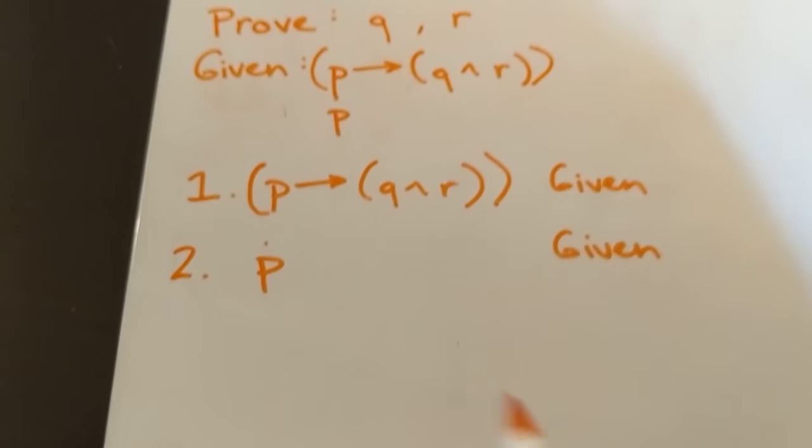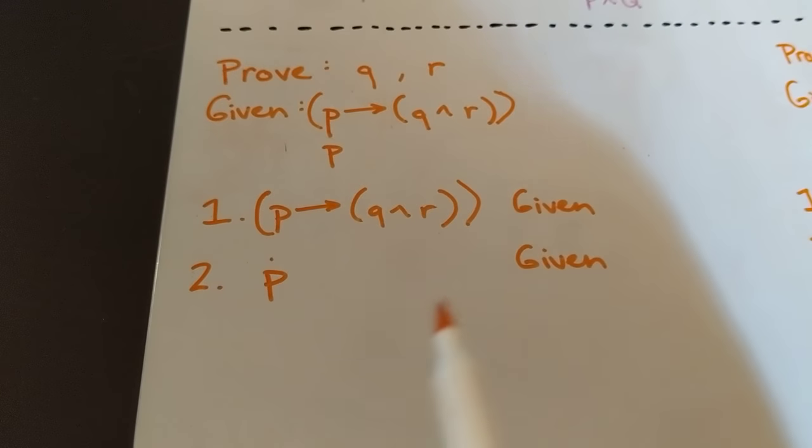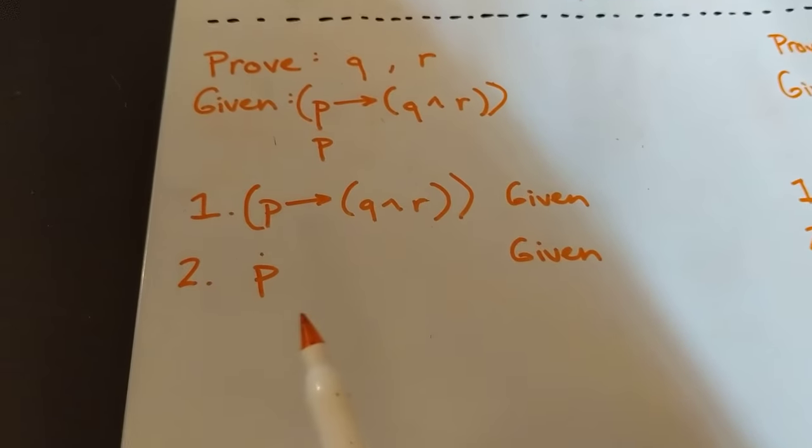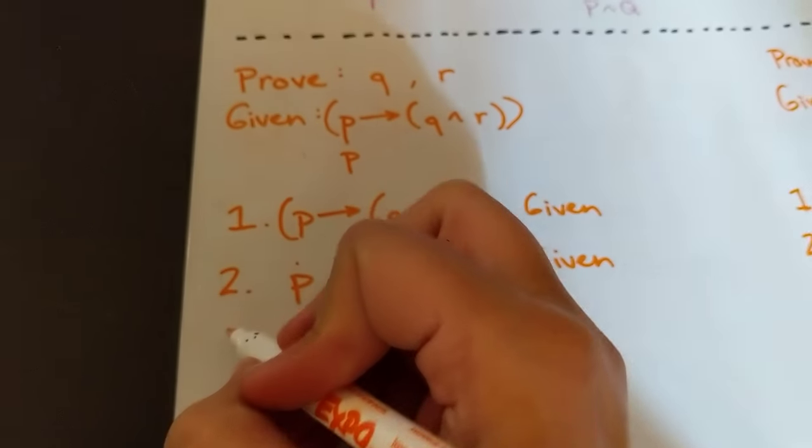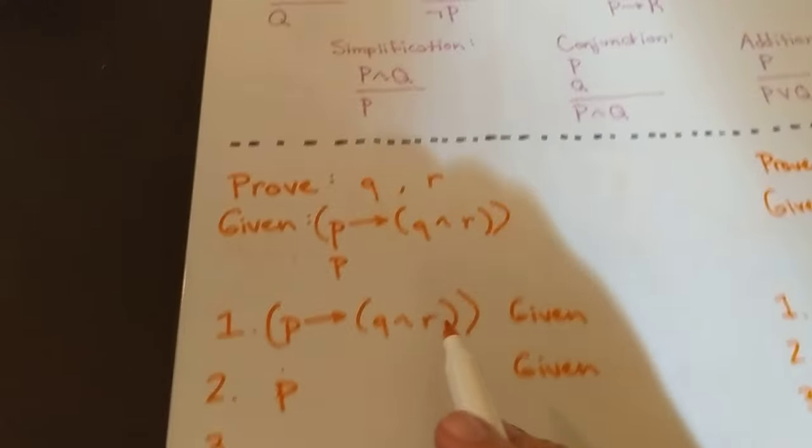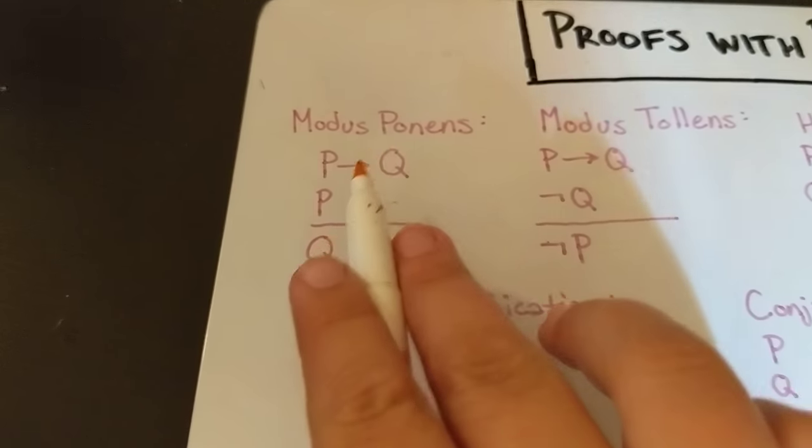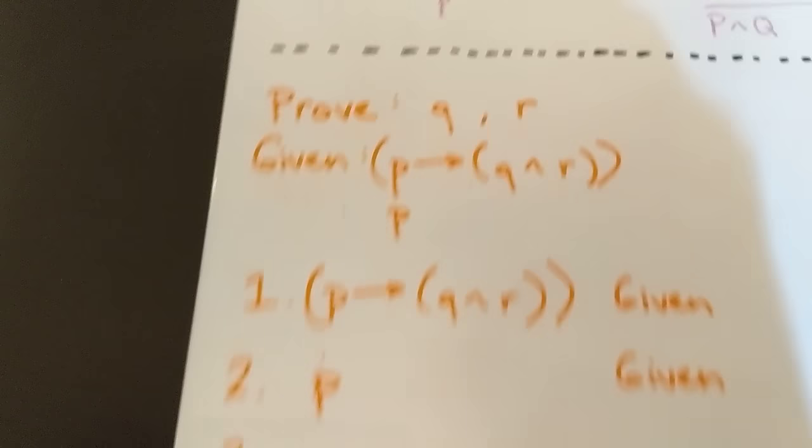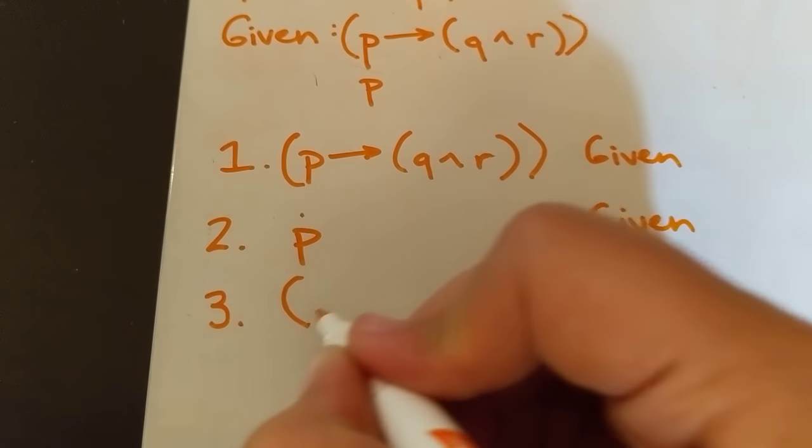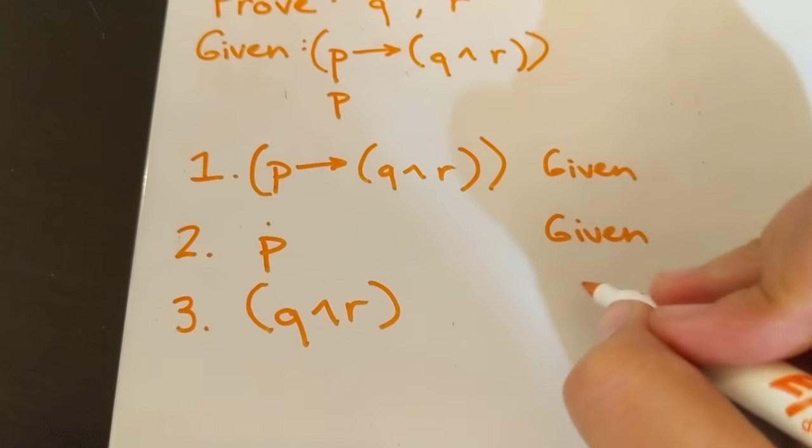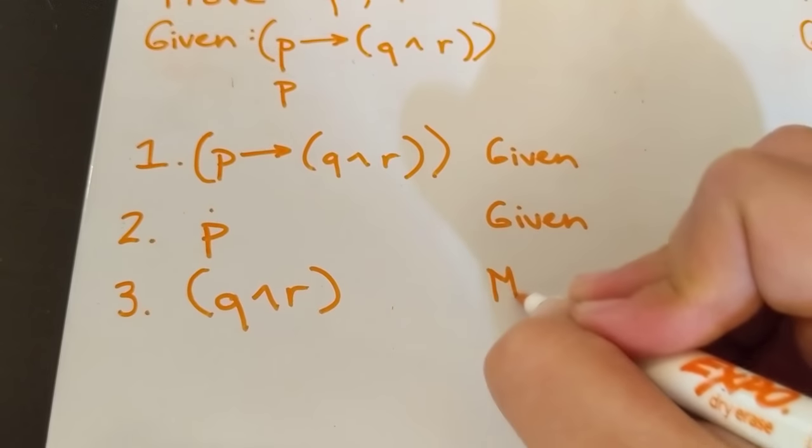Okay, so our first two steps are to put down what we are given. So these are our two pieces of given information, and now we're going to start doing more things with that. So our first step, since this is a simple implication, is to look up to modus ponens. We are given that the left side is true, so we know that the right side is true. So we can conclude Q and R is true by modus ponens.